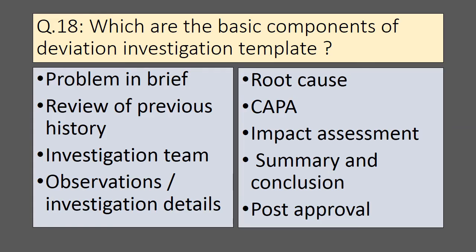What are the basic components of a deviation investigation template? The components in sequence are: first, problem in brief; second, review of previous history; third, investigation team; fourth, investigation details or observation details; next, root cause; next, CAPA actions; next, impact assessment; and then summary and conclusion, followed by post approval.